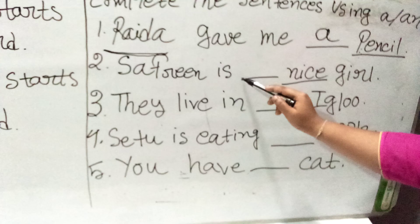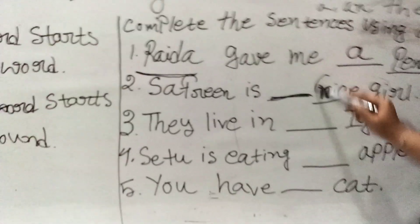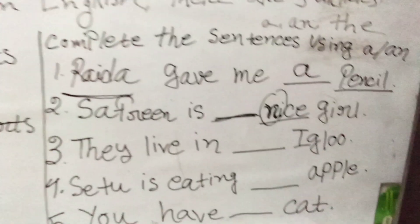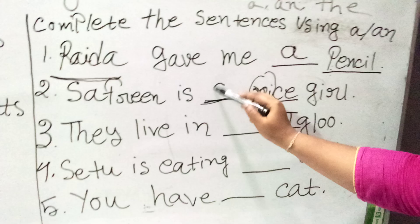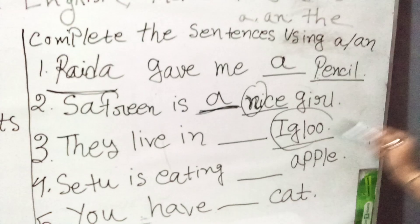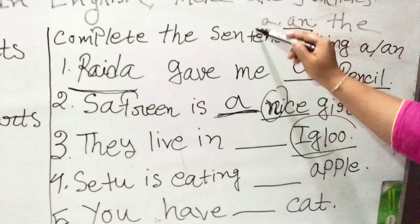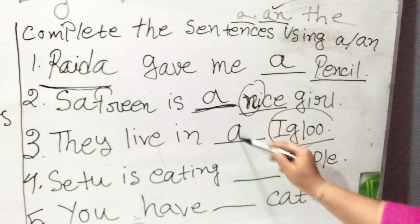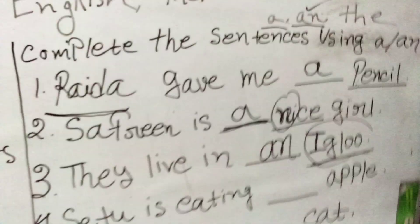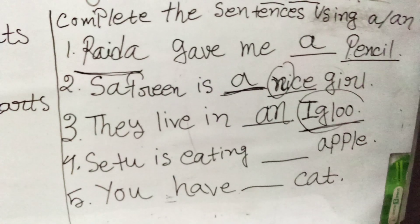The third example: 'They live in ___ igloo.' The word 'igloo' starts with 'i', and 'i' is a vowel, so before a vowel we put 'an'. The article here is 'an' because 'igloo' starts with 'i', which is one of the five vowels. Next: 'Shetu is eating ___ apple.' The word 'apple' starts with 'a', which is a vowel, so we put 'an'.